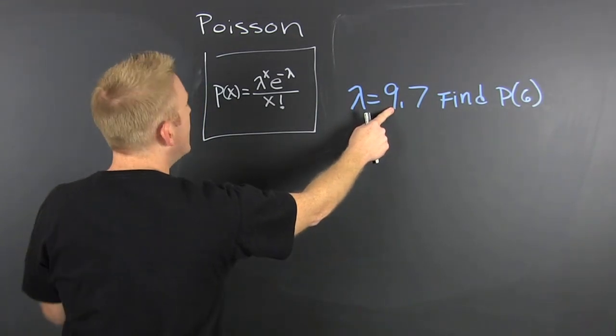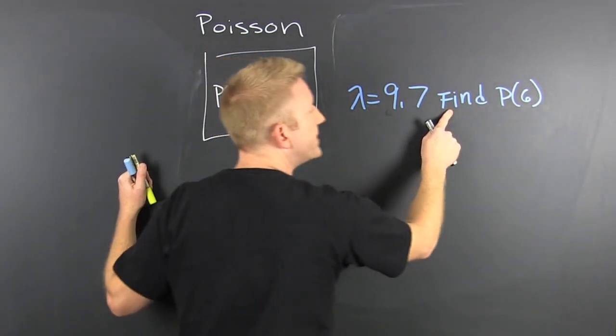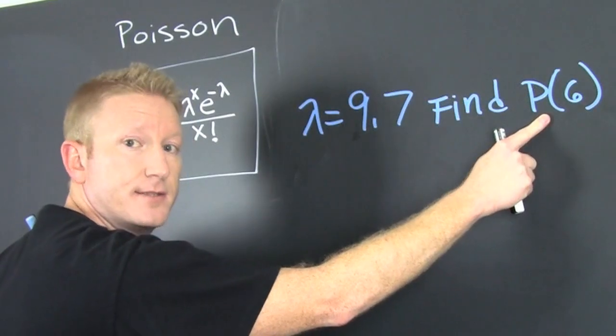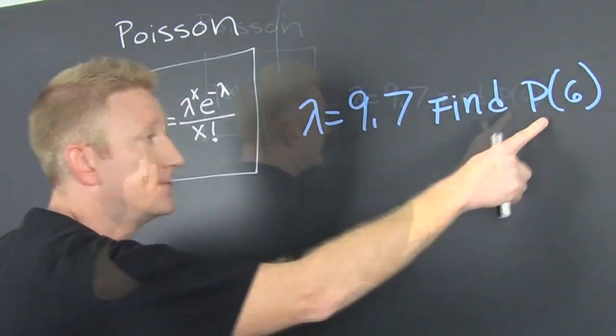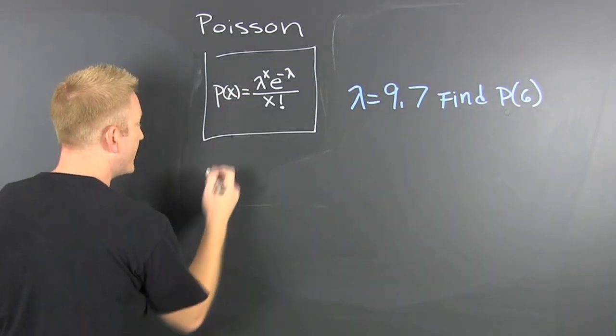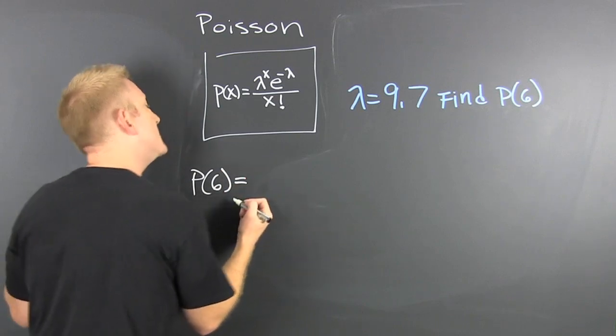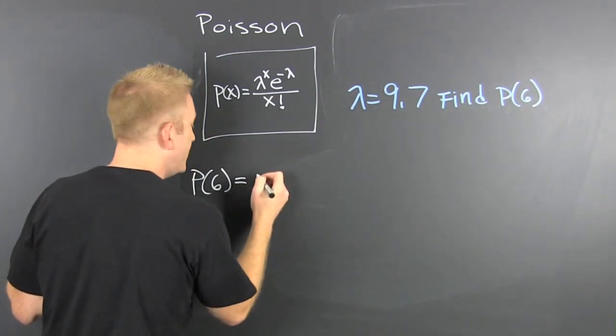If this airline has 9.7 complaints in a day, what's the probability that they will get exactly six? So we plug it in. The probability of six complaints exactly is going to be 9.7 to the sixth power, e to the minus 9.7, divided by six factorial.